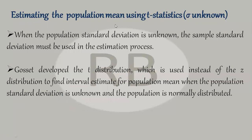Next is estimating the population mean using T-statistics when sigma is unknown. In all the cases we have seen so far, sigma was known. But if sigma is not known, instead of using z-statistics — that is, the standard normal table — we use T-statistics. When the population standard deviation is unknown, the sample standard deviation must be used in the estimation process.